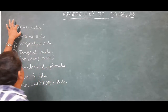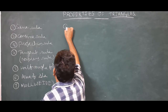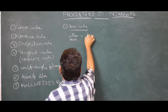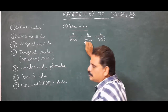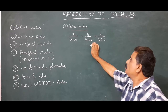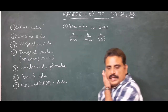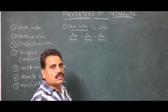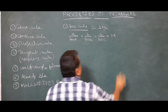First, the sine rule. The sine rule states: a by sin A = b by sin B = c by sin C, where a, b, c are the sides of triangle ABC — a is the side opposite angle A, b opposite to B, c opposite to C — and this equals 2r, where r is the circumradius.